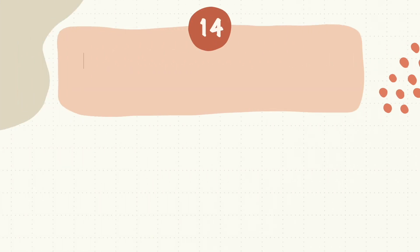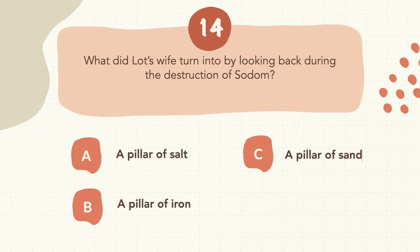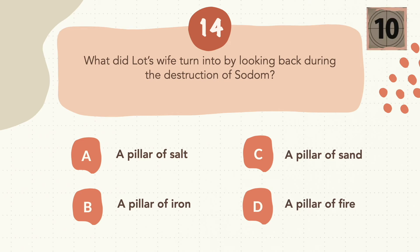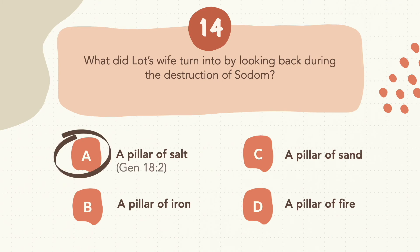Question 14: What did Lot's wife turn into by looking back during the destruction of Sodom? The correct answer is A, a pillar of salt.